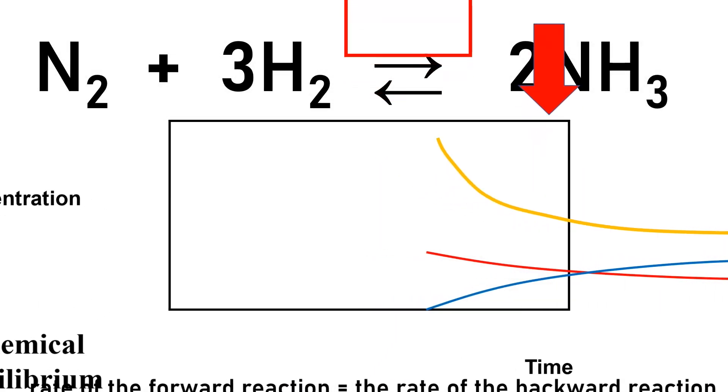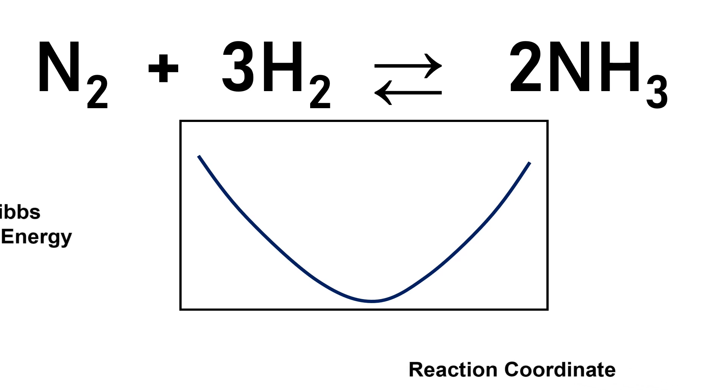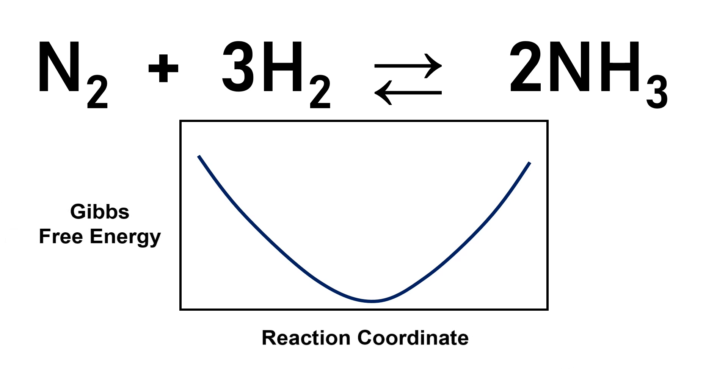From a thermodynamic perspective, we can think of equilibrium as the point where the change in Gibbs free energy is zero. Recall from the study of Gibbs free energy, a reaction will be spontaneous when the change in Gibbs free energy is negative. Here is the classic example of a ball rolling down a hill.